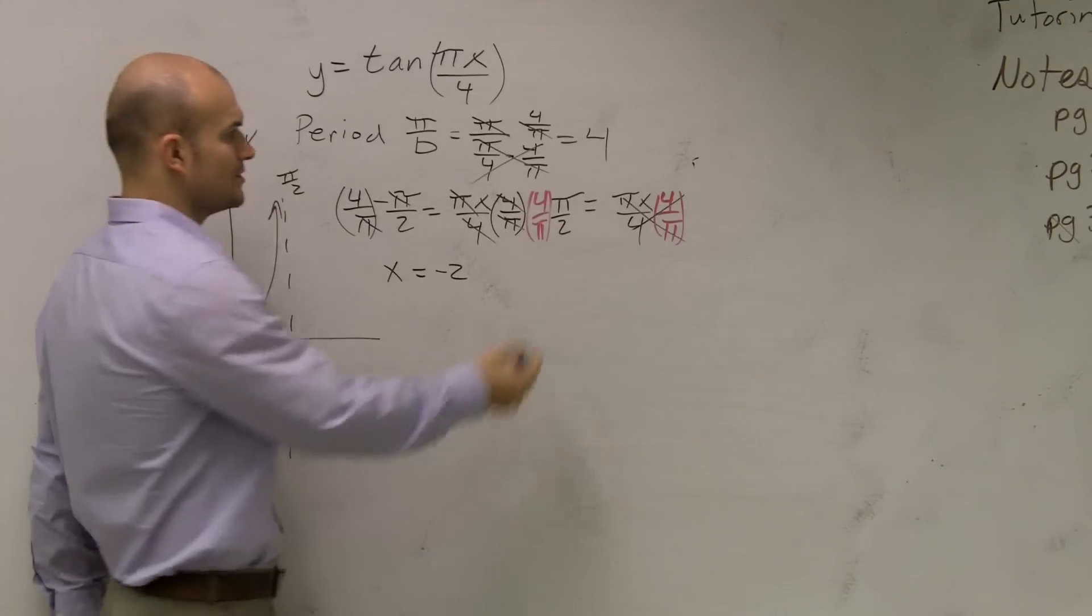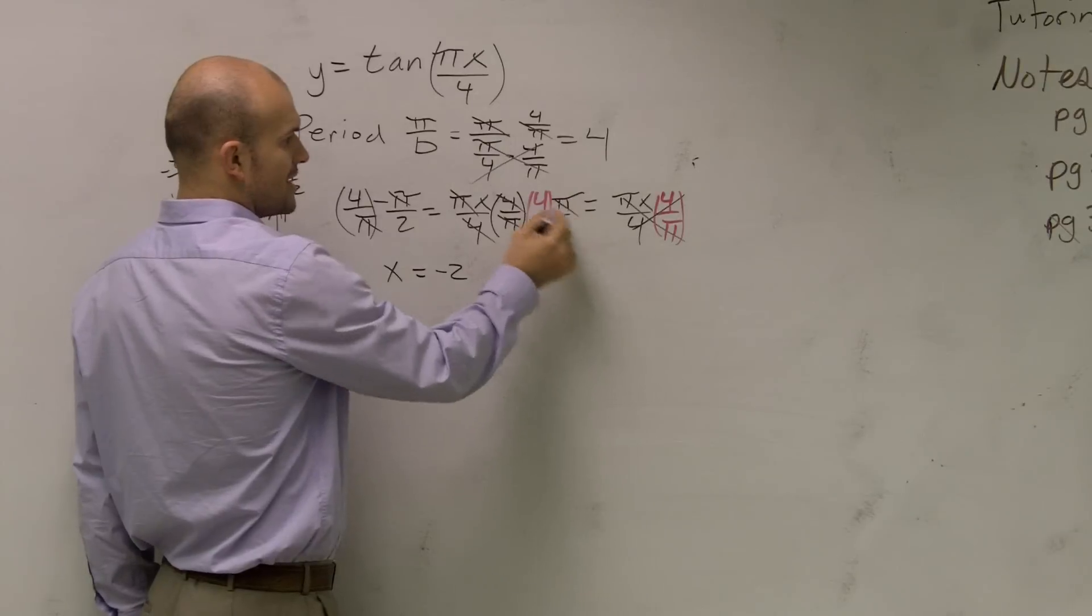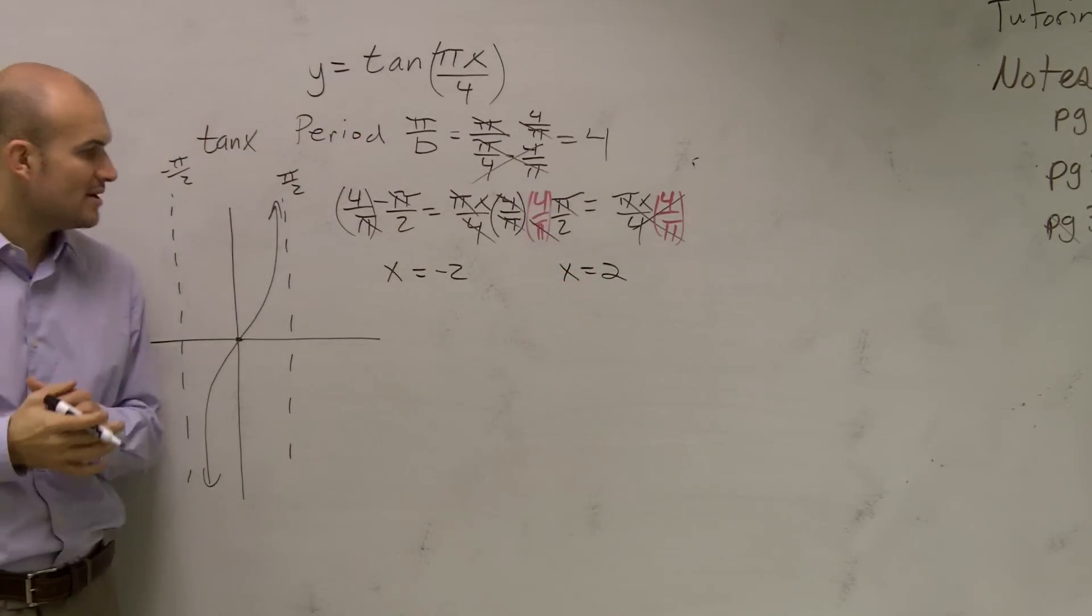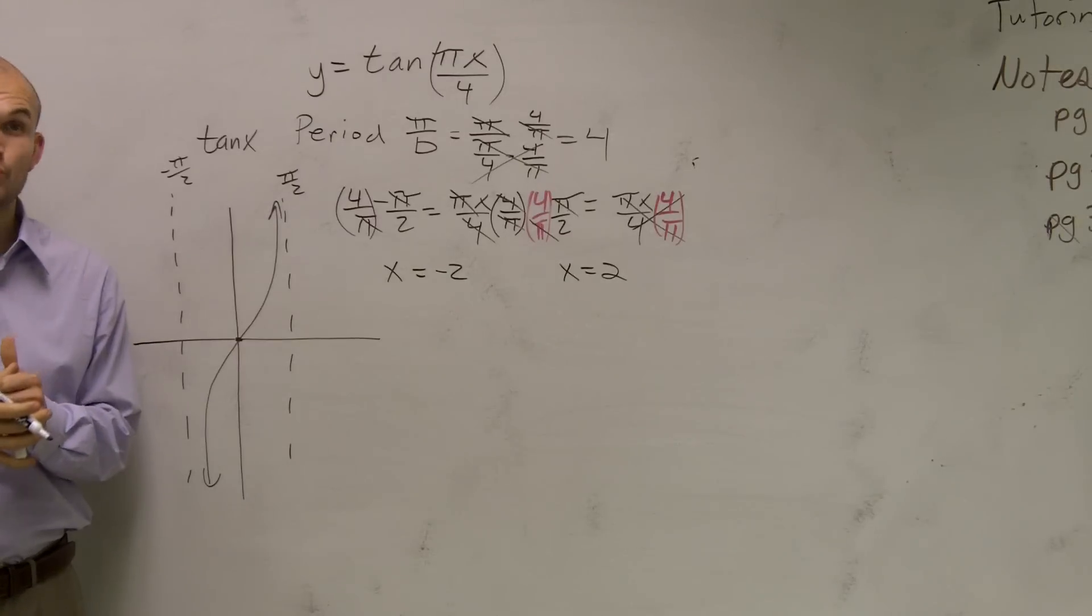So we have x = -2. Those cancel out, 4 divided by 2, so x = 2. Our new two endpoints are x = -2 and x = 2.